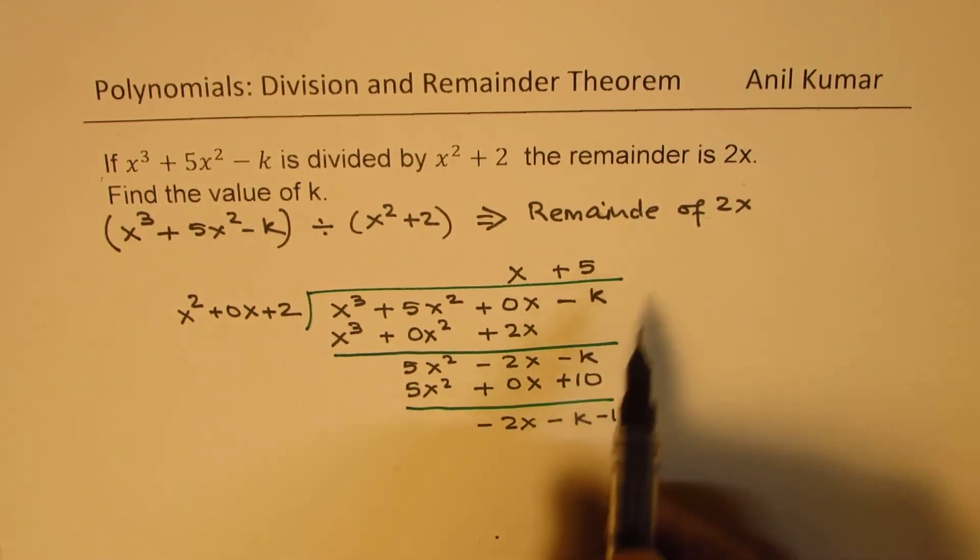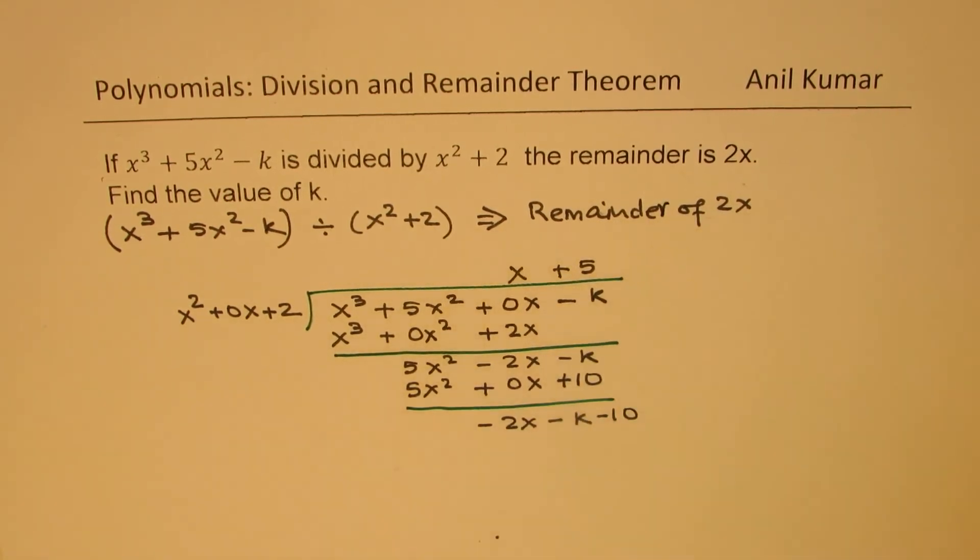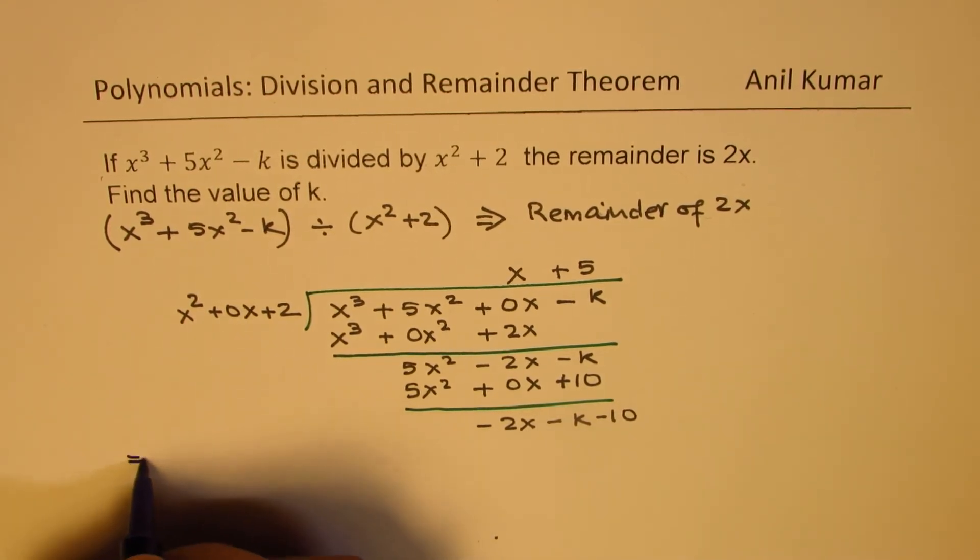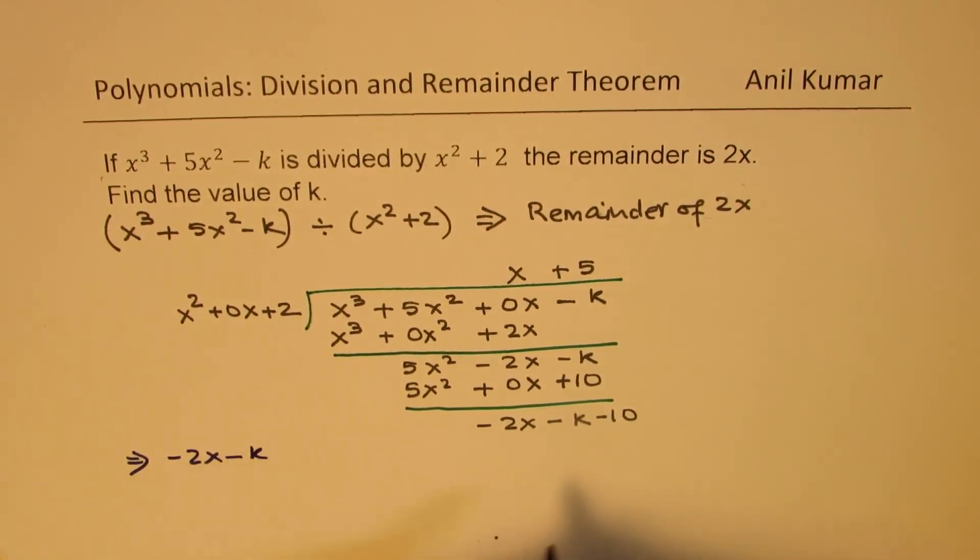But you want the remainder to be 2x. The question states that the remainder is 2x. So what should be the value of k? So that implies that minus 2x minus k minus 10 should be equal to 2x.